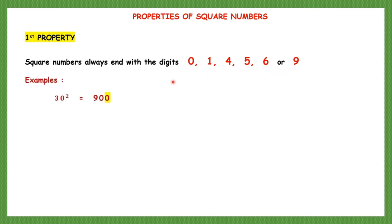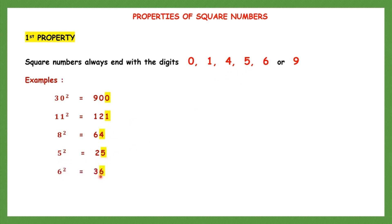Let's see some examples. 30 squared ends in 0. 11 squared ends in 1. 8 squared ends in 4. 5 squared ends in 5. 6 squared ends in 6. 13 squared ends in 9. If you take any number and square it, it will end in one of these digits. If it ends in another digit, it is not a perfect square. That is the first property.